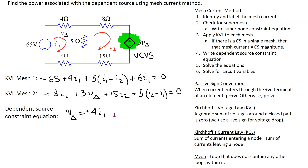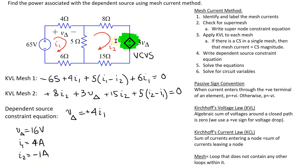This completes the process of writing the circuit equations. We have three equations and three unknowns: i1, i2, and v_delta. Solving these gives v_delta equals 16 volts, i1 equals 4 amps, and i2 equals minus 1 amp. The negative sign for i2 indicates that it actually flows in the anticlockwise direction rather than the assumed clockwise direction.